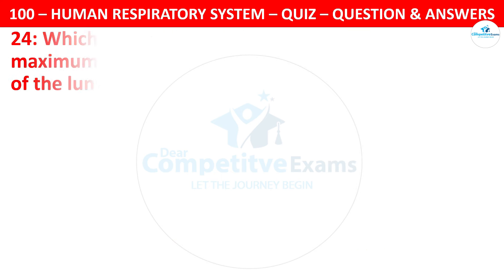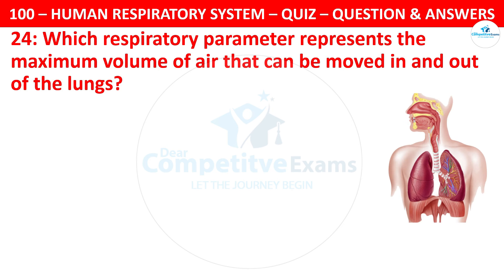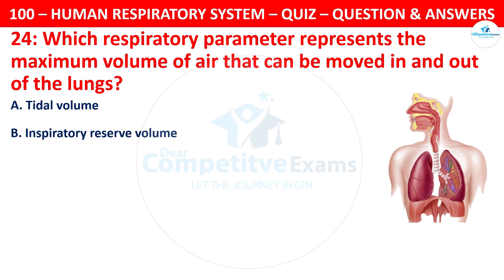Question 24. Which respiratory parameter represents the maximum volume of air that can be moved in and out of the lungs? The options are: tidal volume, inspiratory reserve volume, vital capacity, or residual volume.